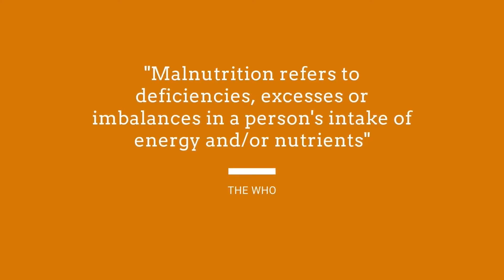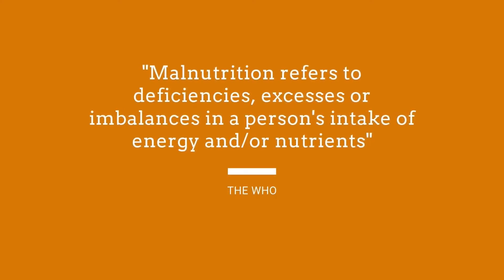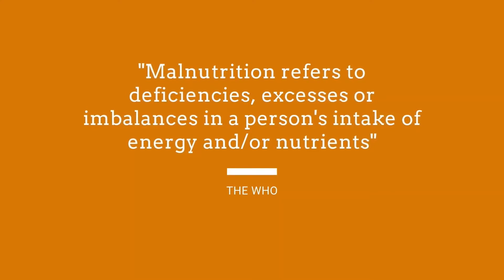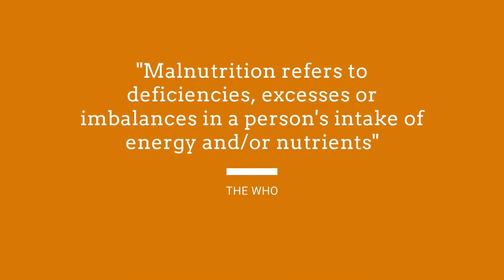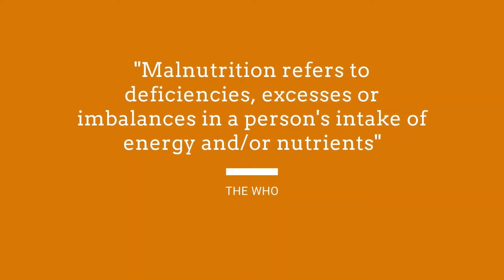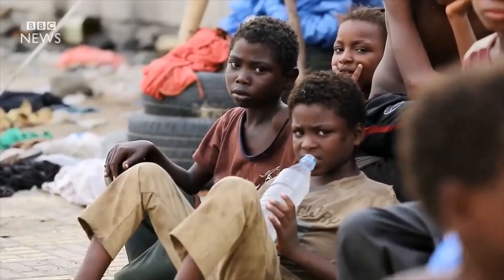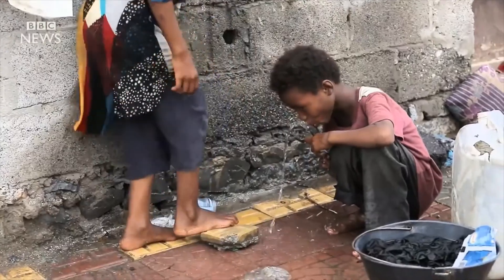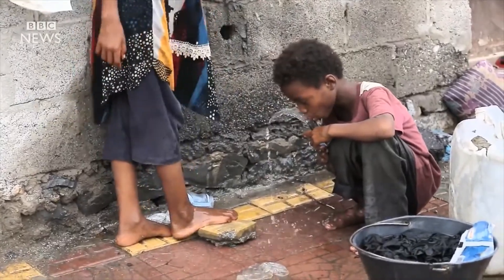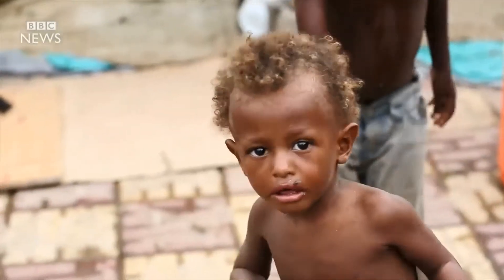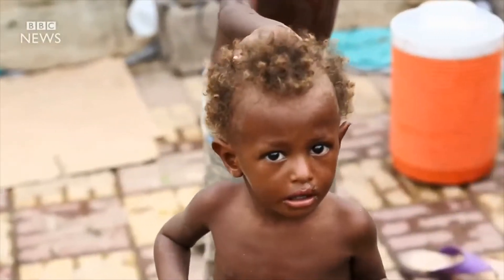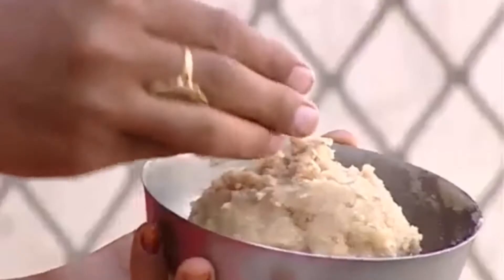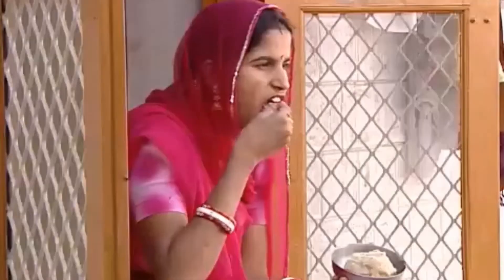According to the WHO, malnutrition refers to deficiencies, excesses, or imbalances in a person's intake of energy and nutrients. 38.3 million children globally come under the category of malnourished. 1.9 billion adults are overweight, while 462 million are underweight.